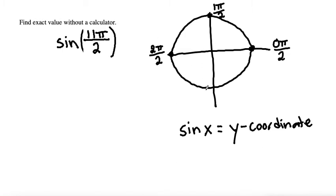If we continue, if this is 2π/2, then here is 3π/2, and back to the starting point is 4π/2, which is the same thing as 2π.